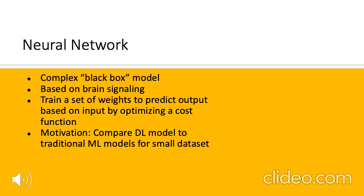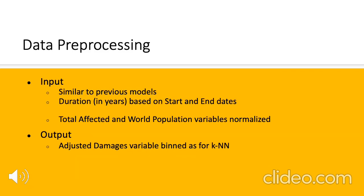The data processing step for the neural network was very similar to the previous models. Two additional features were added: one was duration in years, calculated from the starting and ending dates of the disaster. Additionally, total affected and world population variables were normalized to ensure consistent scale across variables. The output variable was the same as for k-nearest neighbors — the damages variable binned categorically into 12 categories. The model had 59 input features, 64 units in the first hidden layer, 32 units in the second hidden layer, and 12 categories in the output layer.